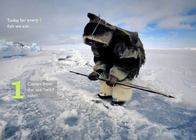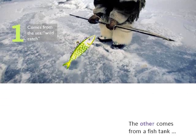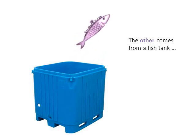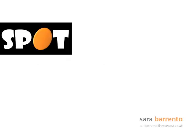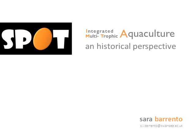For every two fish we eat, one comes from the sea — we call that the wild catch — but the other fish actually comes from a fish tank. This is just to give you the idea that 50% of the production of fish today is actually coming from aquaculture. This is it for my first spot on IMTA. I haven't addressed the IMTA concept yet. My next spot will be about the historical perspective of IMTA and I will explain what IMTA exactly is. So stay tuned.